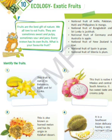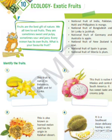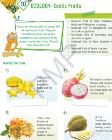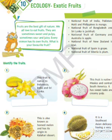Number 3. This is also known as horned melon and has its origin in the Kalahari Desert. This fruit is grown in the Kalahari Desert, and its name is African Cucumber.